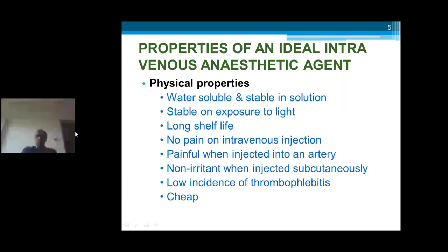What are the properties of an ideal intravenous anesthetic agent? First, physical properties: it should be water-soluble because we dilute all drugs in DNS or normal saline, and it should be stable in solution — not dissociate, mix, or react with the solution. Even on exposure to light, it should be stable and have a long shelf-life. While giving intravenous injection, it should not produce any pain or react with an artery causing damage when injected intra-arterially. It should be non-irritant when injected subcutaneously, with a low incidence of thrombophlebitis.